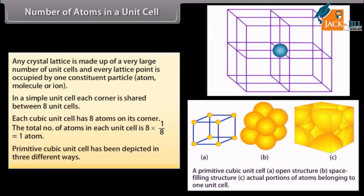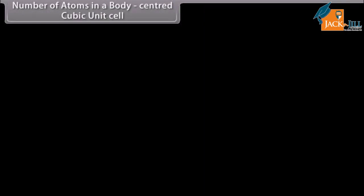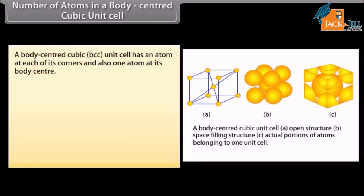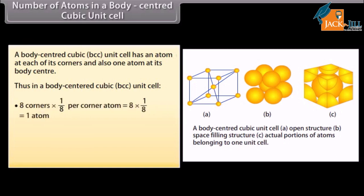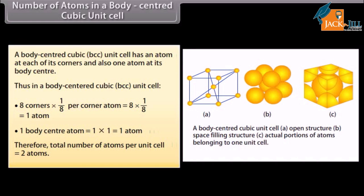The primitive cubic unit cell has been depicted in three different ways. A body-centered cubic (BCC) unit cell has an atom at each of its corners and also one atom at its body center. Thus, corner contribution: 8 × 1/8 = 1 atom, plus one body-centered atom = 1 atom. Therefore, the total number of atoms per unit cell is equal to two atoms.